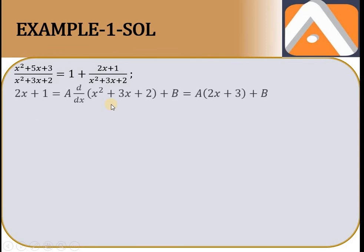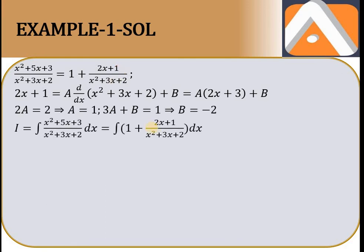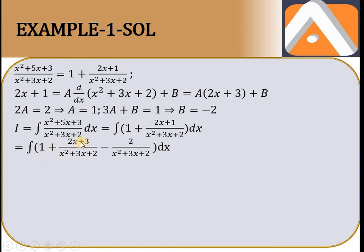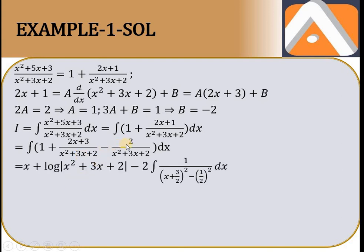Yeh remainder wala part — 2x + 1 upon quadratic — same same linear upon quadratic hai. Toh same procedure: A into denominator ka derivative plus B. Denominator ka derivative 2x + 3 hai. Dekho 2x + 3 aur 2x + 1 mein difference sirf 2 hai, toh numerator mein denominator ka derivative set karo, 2 add karke subtract karo — bas ho jaayega. Completing the square: (x + 3/2)² - (1/2)² form mein.